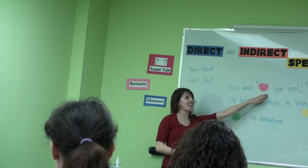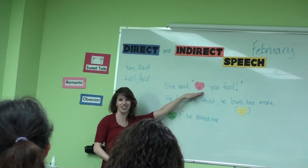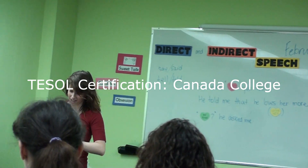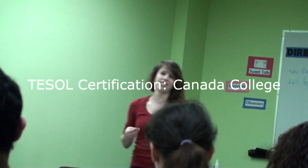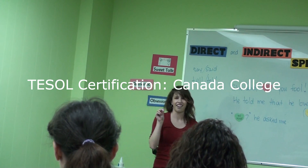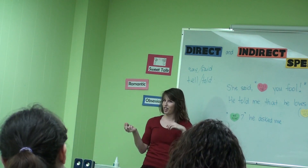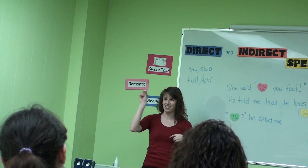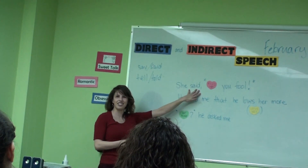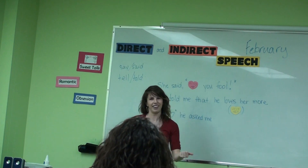The sentences have to include the little sayings on the heart. So say I give you a heart and it says 'kiss me' on it. I have to write a sentence using indirect or direct speech that has 'kiss me' in it — like: She said, 'Kiss me, you fool!'